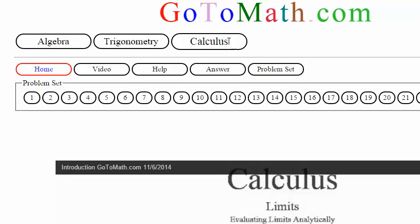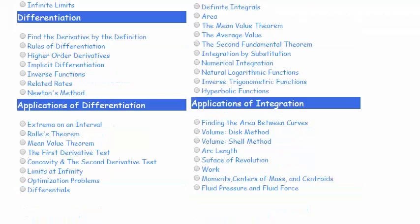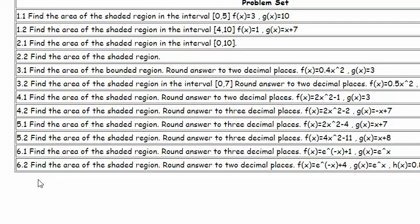Ok, we're at GoToMath.com. Click on the Calculus button. Finding the area between the curves. Find the area of the shaded region. Round answer to two decimal places.